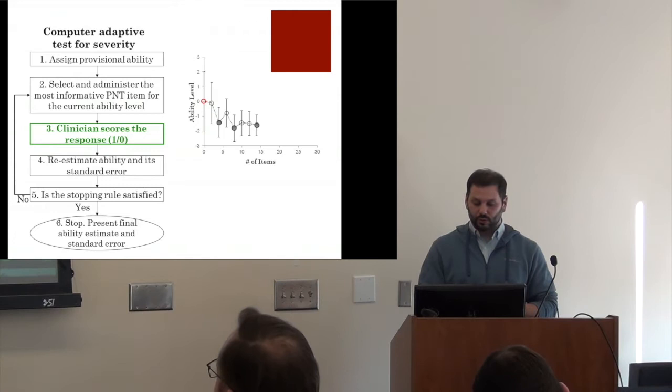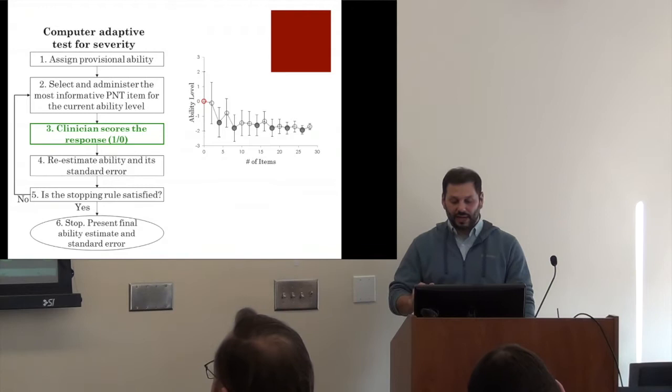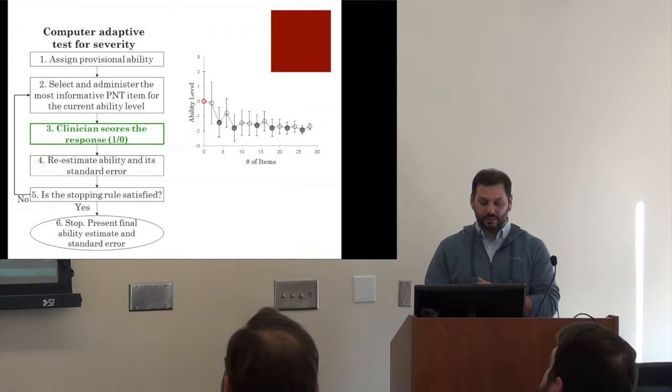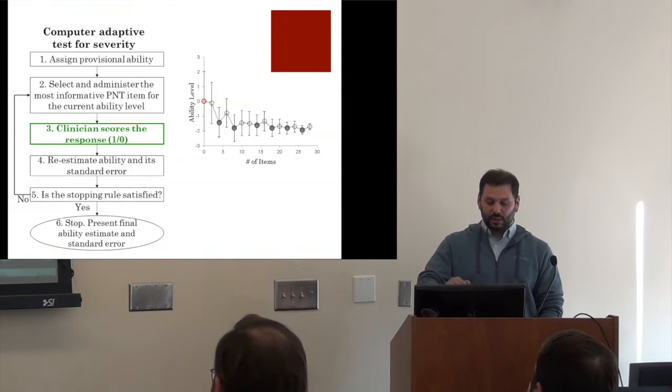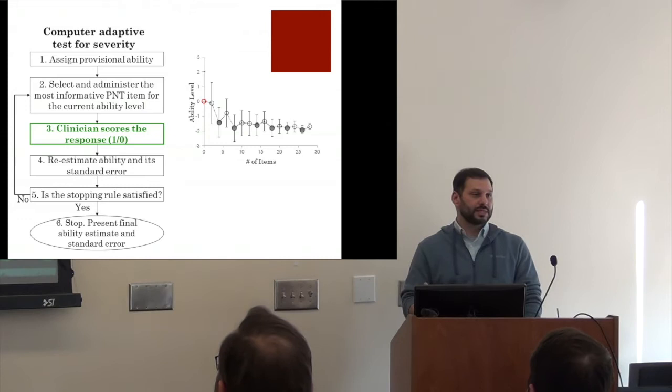Following this sequence, the algorithm quickly converges to the person's ability estimate by ignoring a large number of uninformative items. For this study, the stopping rule was administering 30 items.